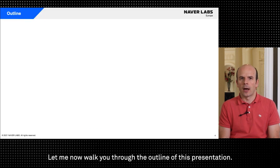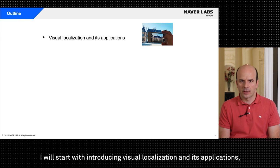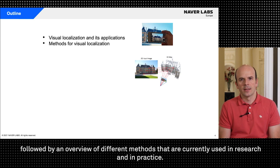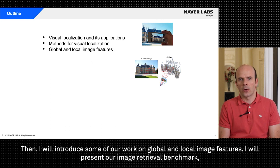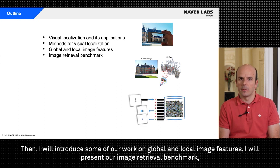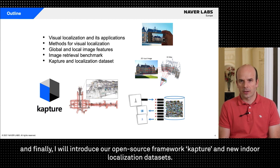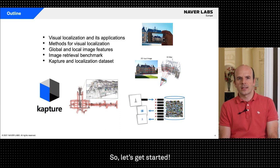Let me now walk you through the outline of this presentation. I will start with introducing visual localization and its applications, followed by an overview of different methods that are currently used in research and in practice. Then I will introduce some of our work on global and local image features, I will present our image retrieval benchmark and finally I will introduce our open source framework, Capture, and new indoor localization datasets. So let's get started.